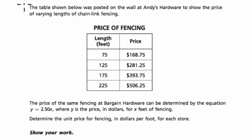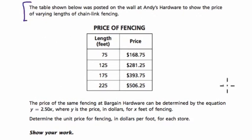So let's start by reading the problem together. It says that the table shown below was posted on the wall of Andy's hardware store to show the price of varying lengths of chain link fencing. And here we have the lengths and the prices. The price of the same fencing at bargain hardware can be determined by the equation y equals 2.5x, where y is the price in dollars for x feet of fencing. Determine the unit pricing and fencing in dollars per foot for each store.